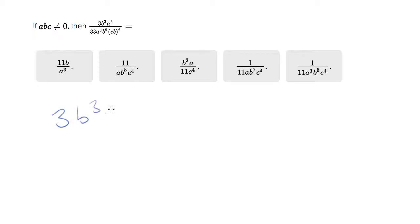3b cubed a squared over 33 a cubed b to the 6 cb to the 4th. I'm actually going to write this as c to the 4th and b to the 4th, I'm going to split that apart.